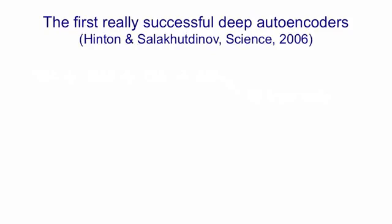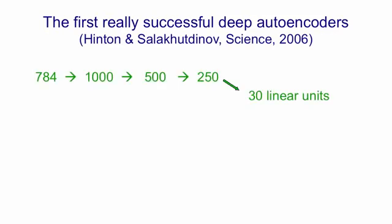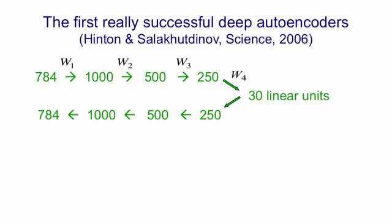The first really successful deep autoencoders were learned by Russ Salakhutdinov and I in 2006. We applied them to the MNIST digits. We started with images with 784 pixels, and then encoded those via three hidden layers into 30 real-valued activities in a central code layer. We then decoded those 30 real-valued activities back to 784 reconstructed pixels. We used a stack of restricted Boltzmann machines to initialize the weights used for encoding, and then took the transposes of those weights to initialize the decoding network.